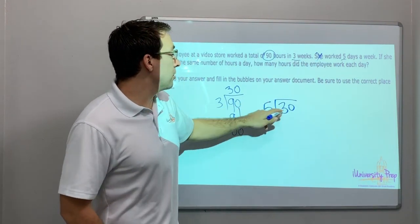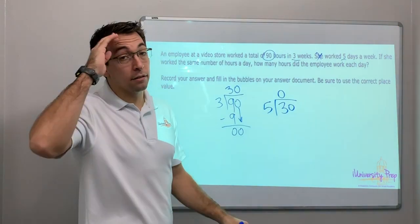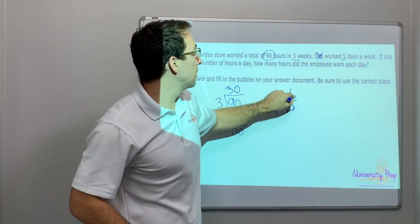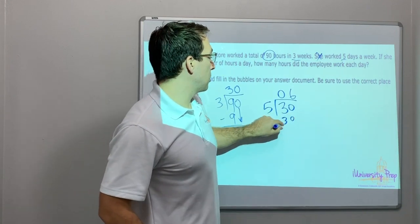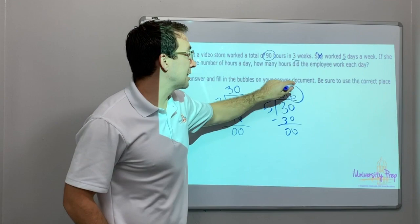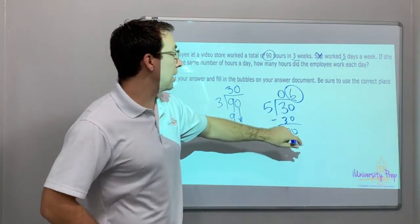Five goes into three zero times. Five goes into 30. Five times six. This is multiplication tables. Five times six is 30. So our answer is six. Six hours per day.